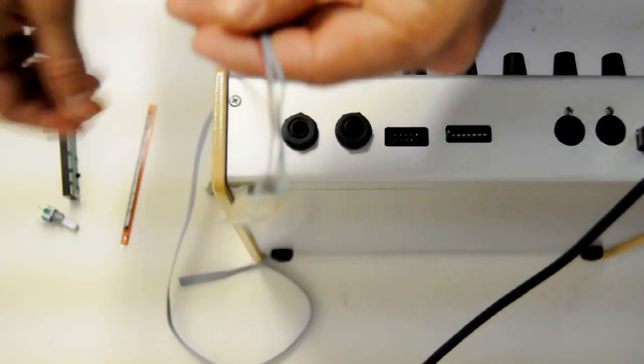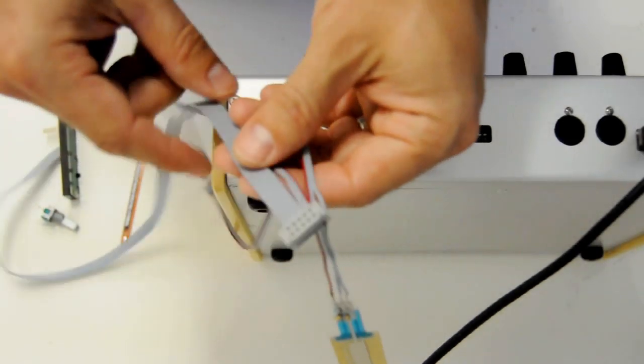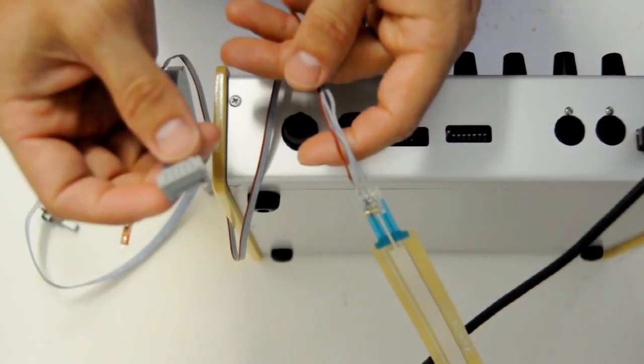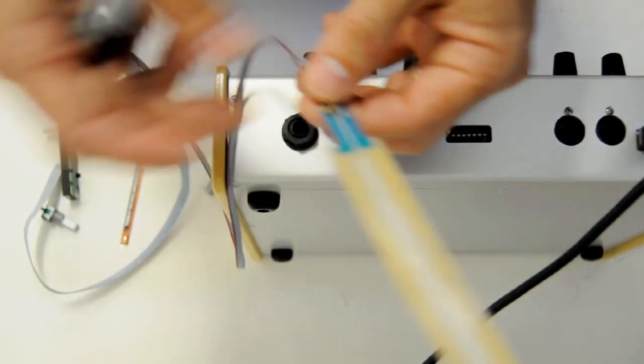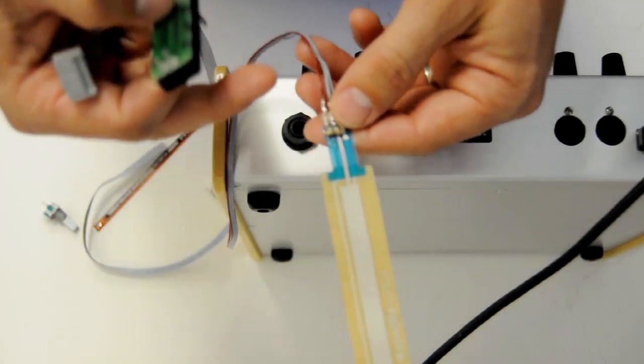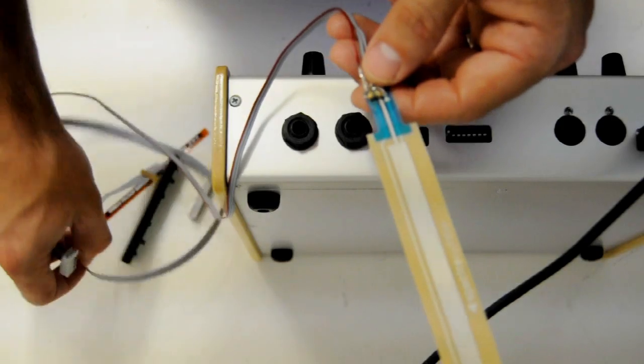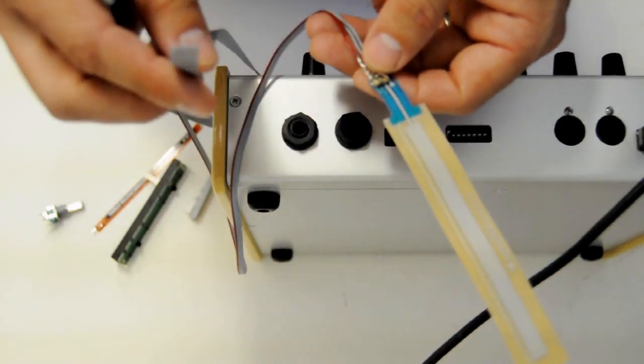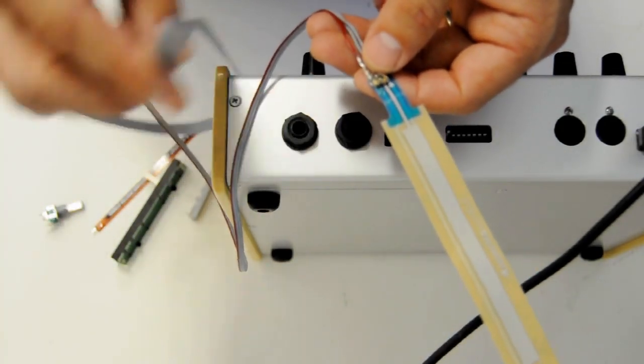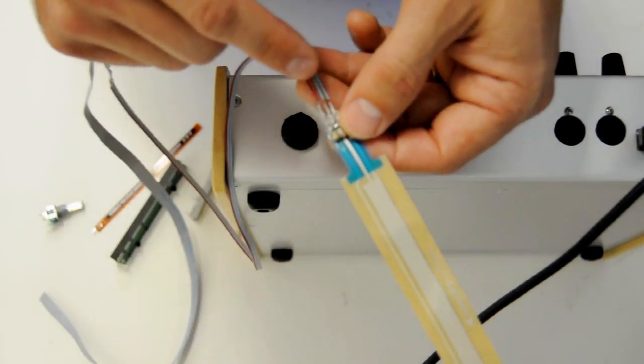Alright, so once you have your ribbon cable wired up, you can see it's pretty simple. I've just run 3 wires. Again, if you were going to connect additional controls, you would just use the same ground and power and run to all ground and power. And then, these additional 7 would be for your wiper. I say 7 because I've already used one here.